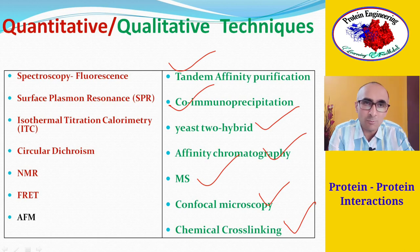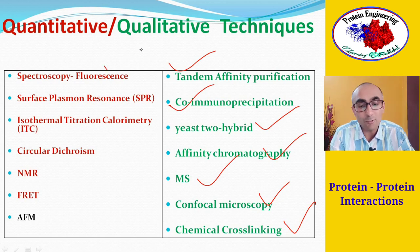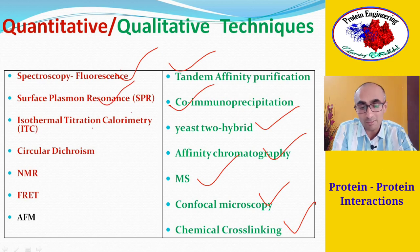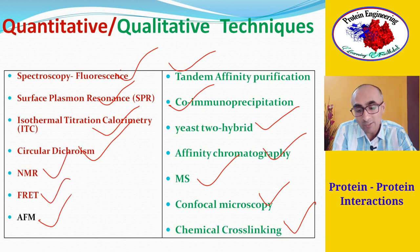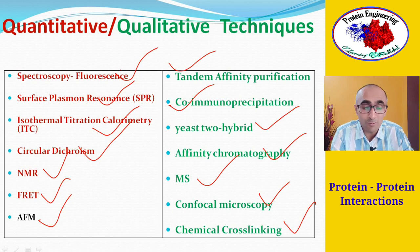Quantitative techniques determine how strongly two or more proteins associate with each other. Several biophysical techniques are employed: fluorescence spectroscopy can be used to find binding affinity or binding constant between two protein molecules, surface plasmon resonance spectroscopy, isothermal titration calorimetry, CD, NMR, FRET, and atomic force microscopy are some of the biophysical techniques used in laboratories to find out the strength of affinity between two protein molecules.